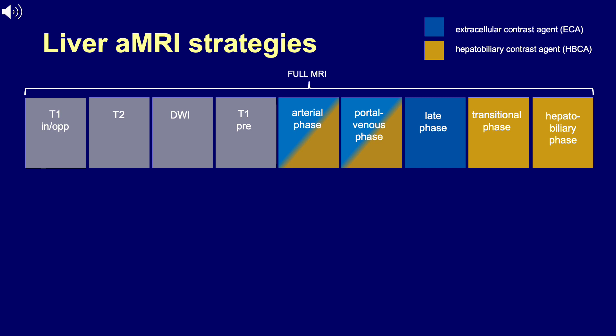As you all know, a full MRI of the liver typically includes a wide range of sequences, and a protocol like this can easily take 30 to 40 minutes in clinical routine. For abbreviated MRI of the liver, three general approaches have been developed and are being studied in the literature, and we will have a closer look at those strategies right now.